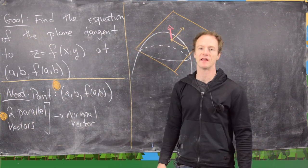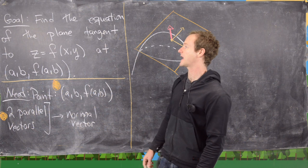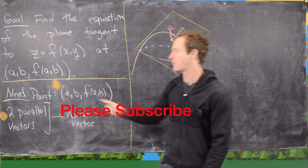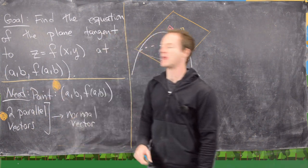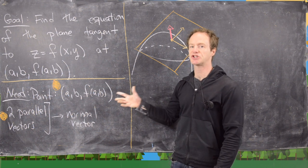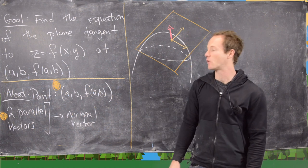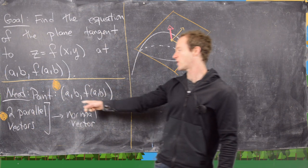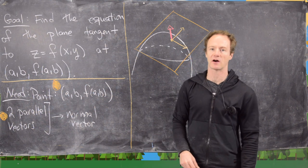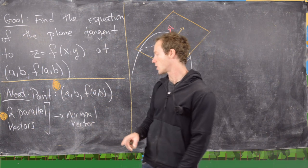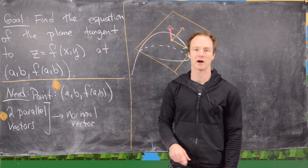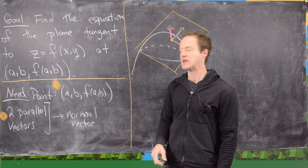Our goal for this video is to derive the equation of the plane tangent to the curve z equals f of xy at the point x equals a, y equals b, and then z will be f of a, b. To find the equation of a plane, we need a point — we've already got that: a, b, f(a,b) — and then we also need two vectors that are parallel to the plane, or one vector that is normal to the plane.